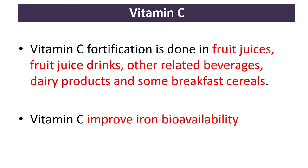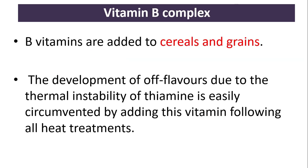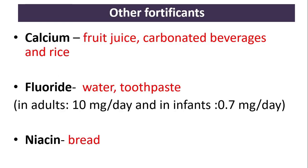Vitamin C fortification is done in fruit juices, fruit juice drinks, other related beverages, dairy products, and some breakfast cereals. Vitamin C improves iron bioavailability. For vitamin B complex, B vitamins are added to cereals and grains. The development of off-flavors due to the thermal instability of thiamine is easily circumvented by adding this vitamin following all heat treatments.